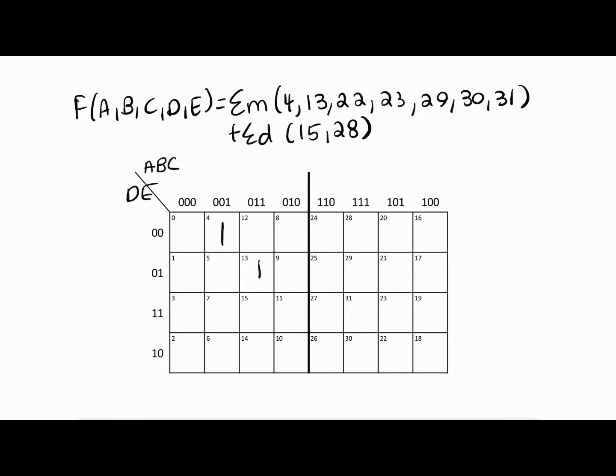So the first step is to put in our 1s: 13, 22, 23, 29, 30, and 31. 15 and 28 are don't cares and everything else is going to be a 0. So filling out the K-map, that's the simple part.